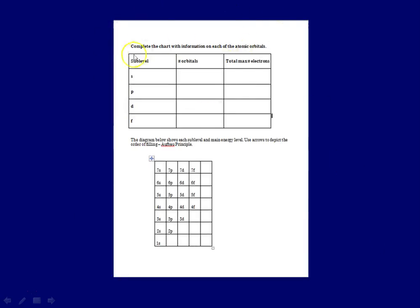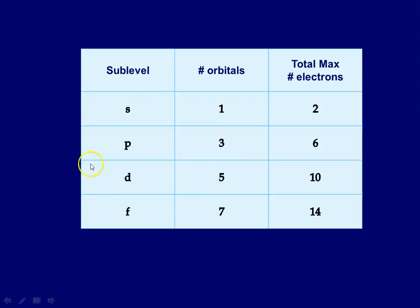And then the second page that you worked on was this one that had this little sublevel chart. And so the next slide shows you how that chart should be filled in. So here you'll see that it's filled in for you with s, p, d, and f. The number of orbitals for s is 1, p is 3, d is 5, and f is 7.